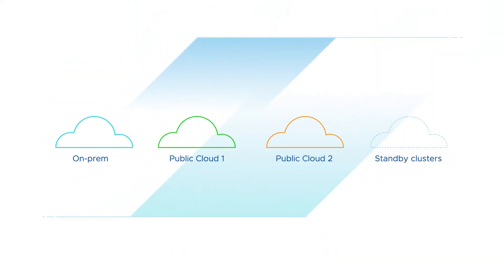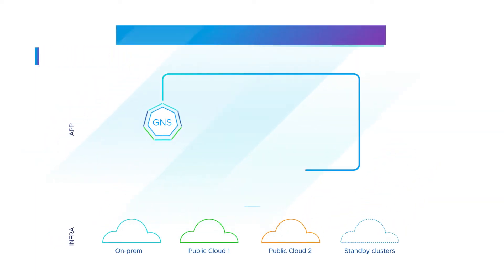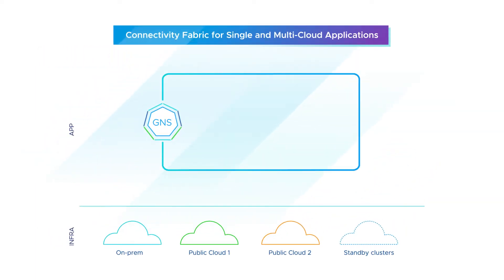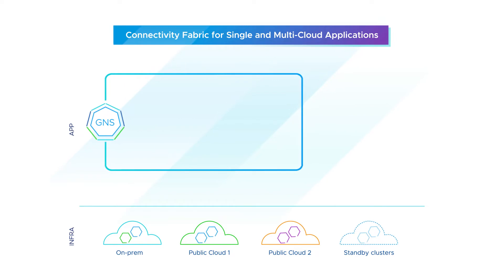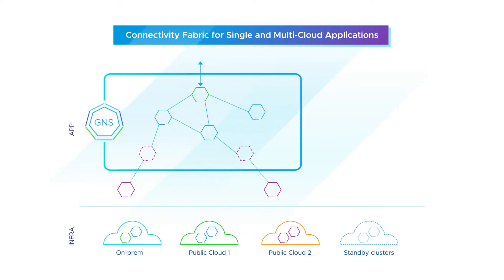With Tanzu Service Mesh, you can abstract the infrastructure layer from the application layer to provide strong isolation using global namespace. By onboarding applications to a global namespace, developers, operations, and security gain consistent policy controls and operational visibility across single and multi-cloud environments.